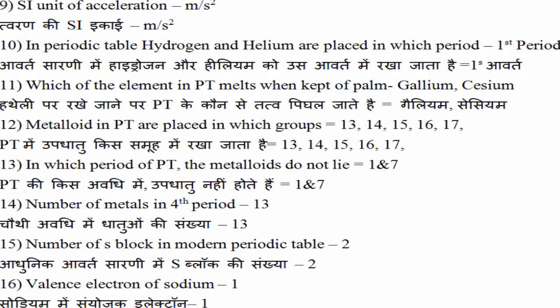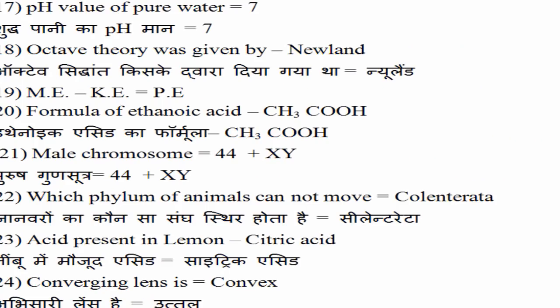17वाँ question: pH पूछा है शुद्ध पानी का — pure water का. तो 7 रहता है, क्योंकि H+ और OH- ion की जो concentration है वो बराबर हो जाती है.